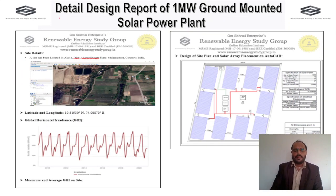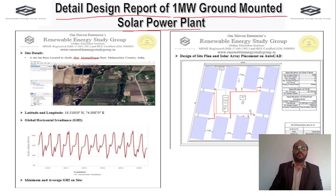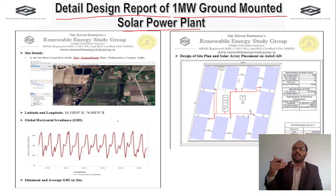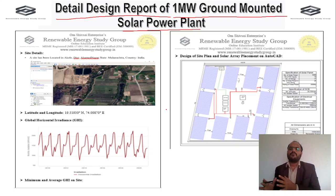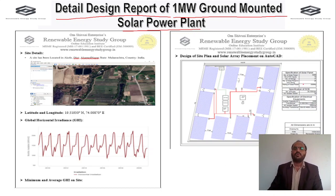We then cover the detailed design report for a one megawatt ground mounted solar power plant — how to draft the report incorporating all necessary parameters from site selection through electrical component selection, adding each parameter one by one into a Word document to prepare the final detailed design report.